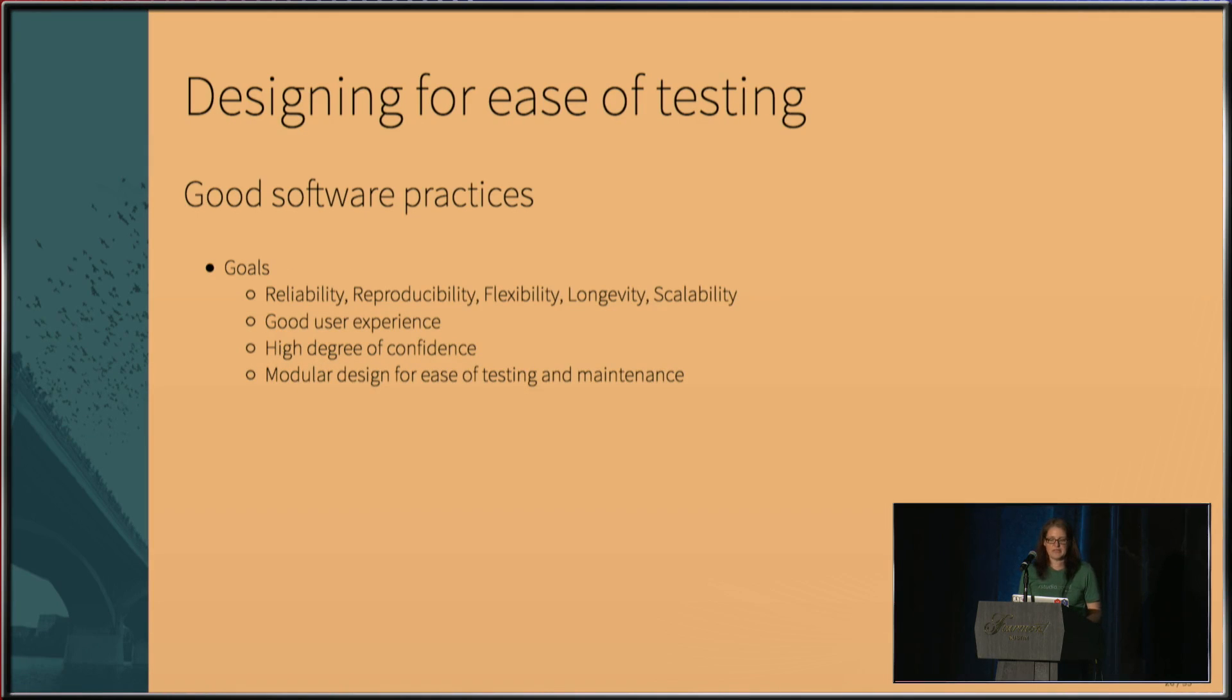So, getting back to something I alluded to earlier, designing for your ease of testing is also designing for ease of maintenance. And so there's some good software practices involved here. Again, your goals are reliability, reproducibility, flexibility, longevity, and scalability. You want a good user experience and you want a high degree of confidence that everything you're doing and all of your changes aren't going to break what you've already done well before. You also want to take a look at a modular design for ease of testing and maintenance. Break things down. It's much easier to test a small function than it is to test a huge function because it's much more easy to control the inputs and outputs that way. You want to decouple your code, pull out helper functions, things like that to make it easier to maintain later. Don't repeat yourself. Keep it simple if you can. So, I don't mean keep your analyses simple. I mean keep the pieces of your analysis, your pieces of code as simple as possible, so they're isolated and easy to test and maintain. And you want a consistent coding style so that it makes it easier for future you to read or for your colleagues for that matter.